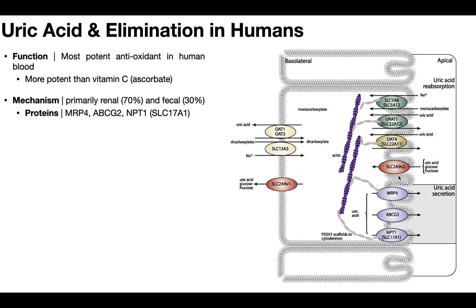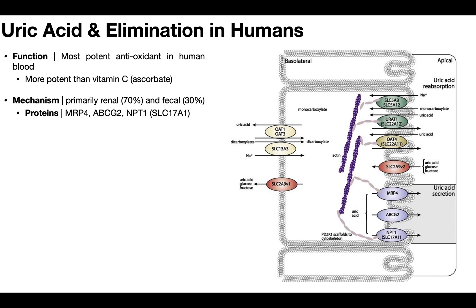There are also transporters that cause reabsorption of uric acid, because it plays such an important role in the blood as an antioxidant. But you can end up with excessive uric acid in the blood, a condition called hyperuricemia — simply elevated levels of serum uric acid. The normal range in humans is approximately 3.5 to 7.2 milligrams per deciliter.